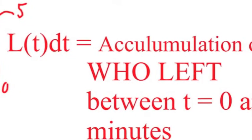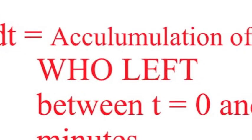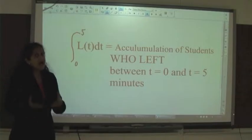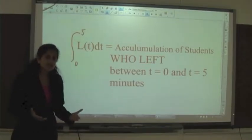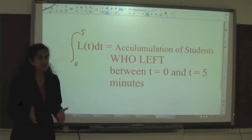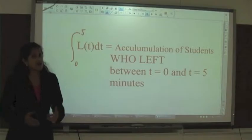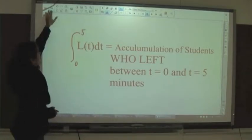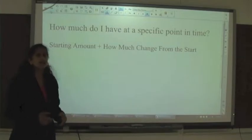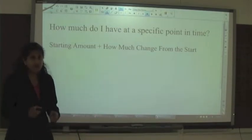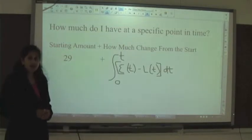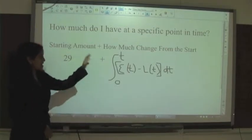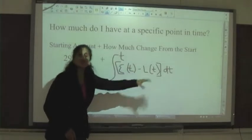Similarly, the anti-derivative of L of T tells me how many students left. I have 29 students in my third period class and they're all going to be here, so the anti-derivative of L of T from zero to five should say that 29 students left. Another question we get asked is where are we at a specific time, which requires knowing what you started with and how much you changed — the 29 students, how many entered, and how many left.